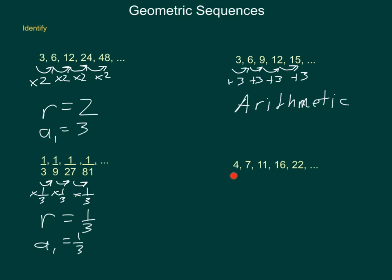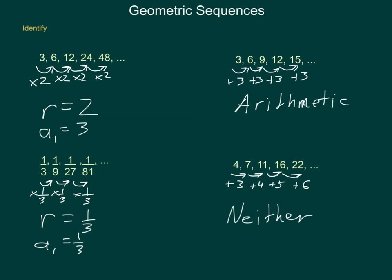Our last sequence: 4, 7, 11, 16, and 22. To move from 4 to 7, there's nothing easy to multiply by, but I could add 3. From 7 to 11, I add 4. From 11 to 16, I add 5. From 16 to 22, I add 6. So I'm not multiplying by the same amount, nor am I adding the same amount each time. It does follow a pattern, but it's not arithmetic and it's not geometric. Now, once I have a sequence I know to be geometric, how do I write its formulas in both explicit and recursive formats?